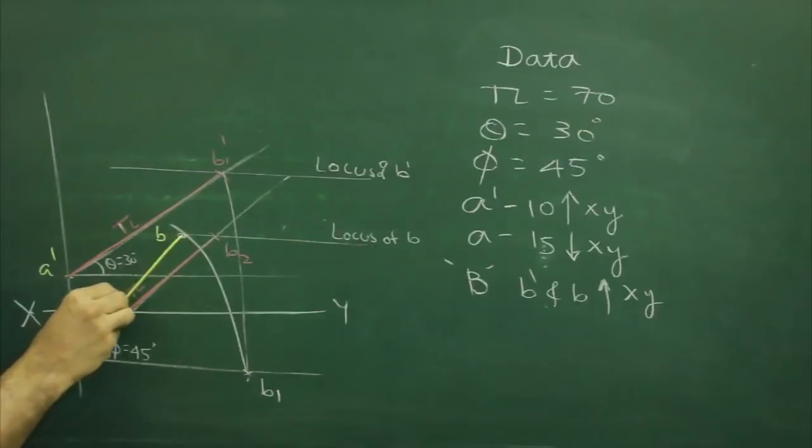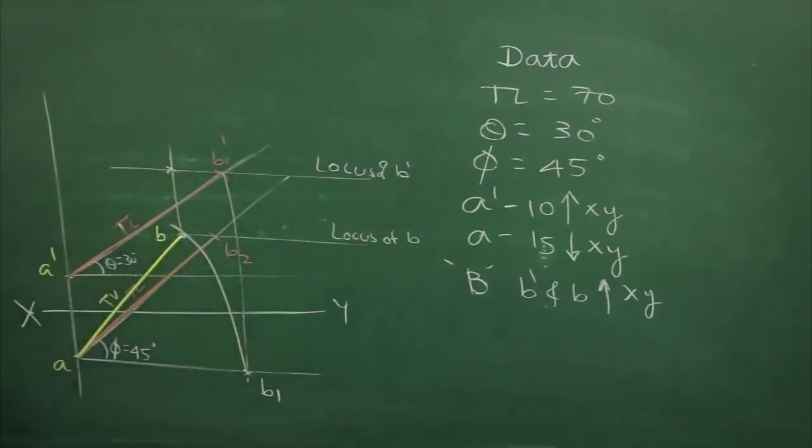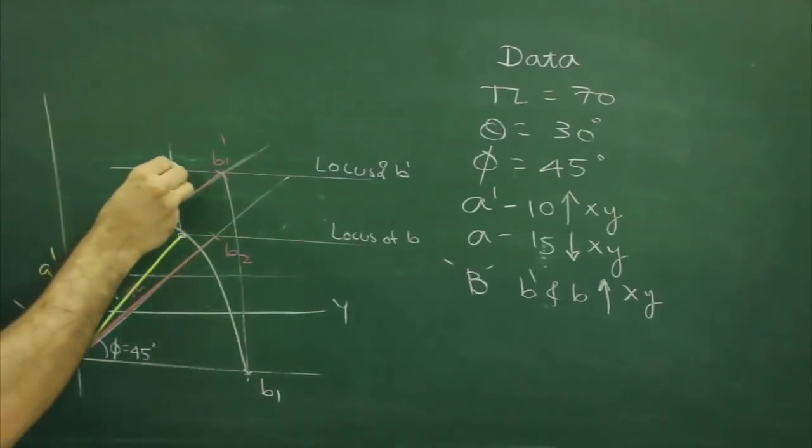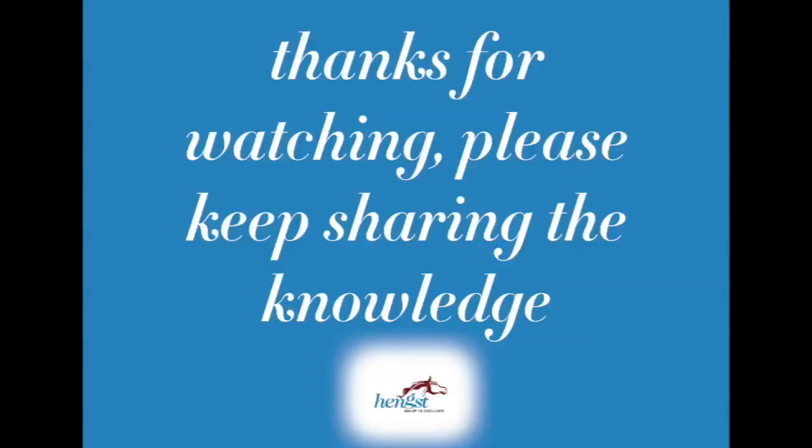So this is top view. Take this point up. Wherever it will cut with locus of b dash, that would be b dash and front view.